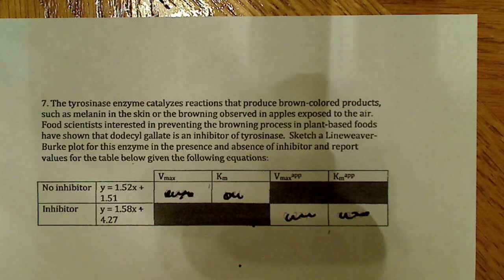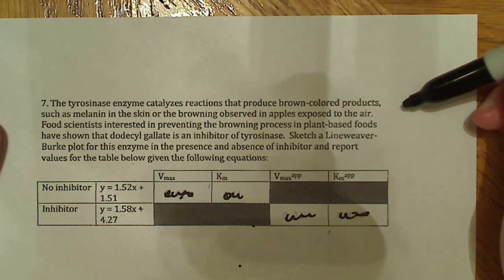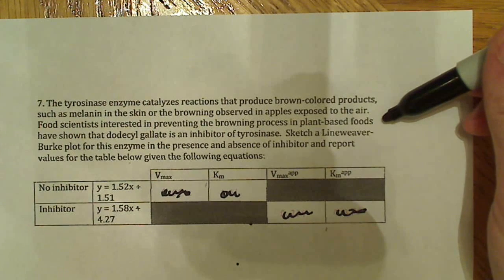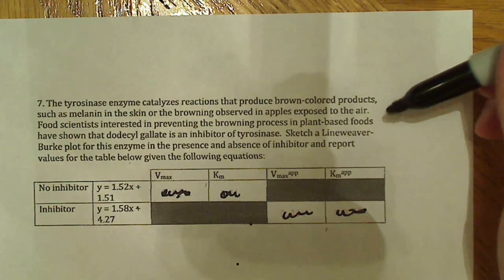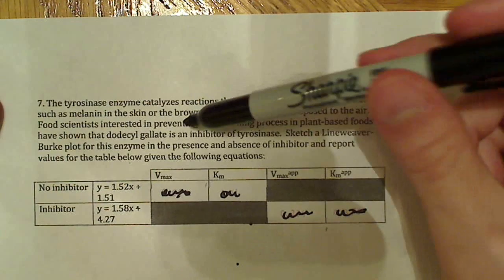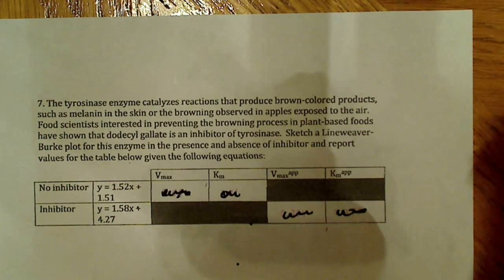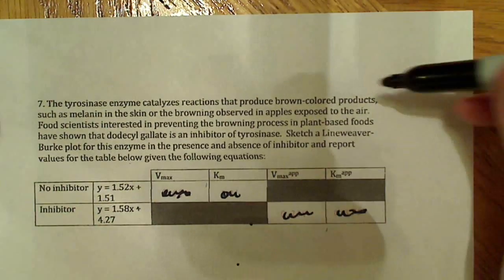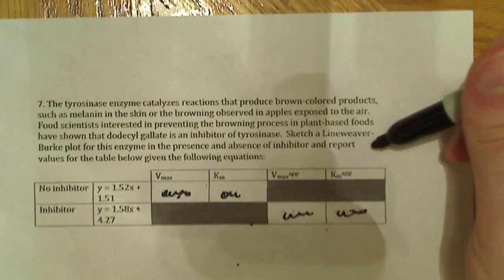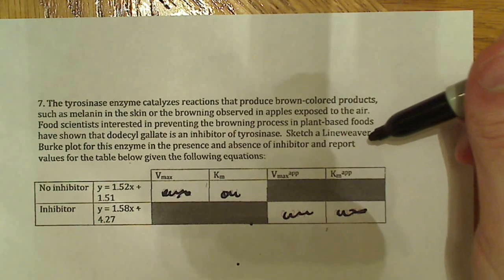The tyrosinase enzyme catalyzes reactions that produce brown-colored products such as melanin in the skin or the browning observed in apples exposed to the air. Food scientists interested in preventing the browning process in plant-based foods have shown that dodecal gallate is an inhibitor of tyrosinase. We know it's some kind of inhibitor - competitive, uncompetitive, or non-competitive. Sketch the Lineweaver-Burk plot for the enzyme in the presence and absence of inhibitor and report values for the table below.